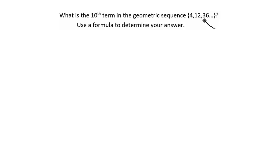In this problem, we're given a sequence, which is just a list of numbers. It's 4, 12, 36, and then that dot dot dot just means it continues on to infinity. So it's going to be an infinite sequence.